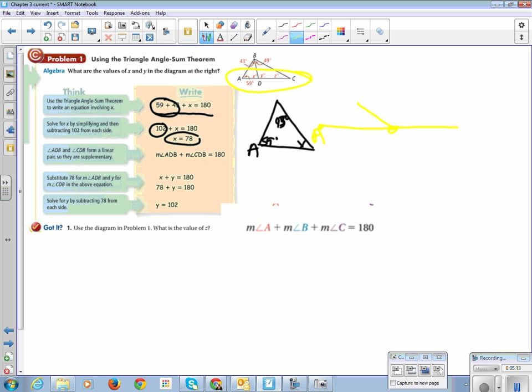And here's C, here's B. So they're saying angle ADB, this guy right here, and angle CDB right here form a straight line. And a straight line is 180 degrees.